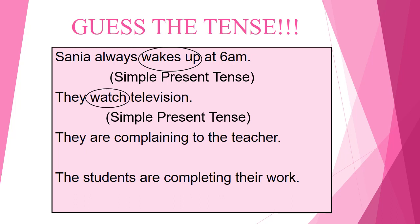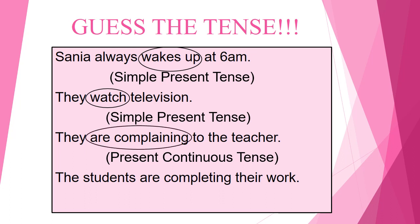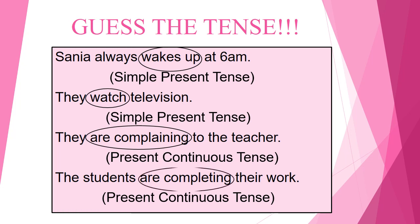Now the third sentence: They are complaining to the teacher. This is an example of present continuous tense, as we have used the helping verb 'are' with the verb 'complain' plus '-ing.' Fourth sentence: The students are completing their work. This is also an example of present continuous, as we have used a helping verb plus verb with '-ing.'